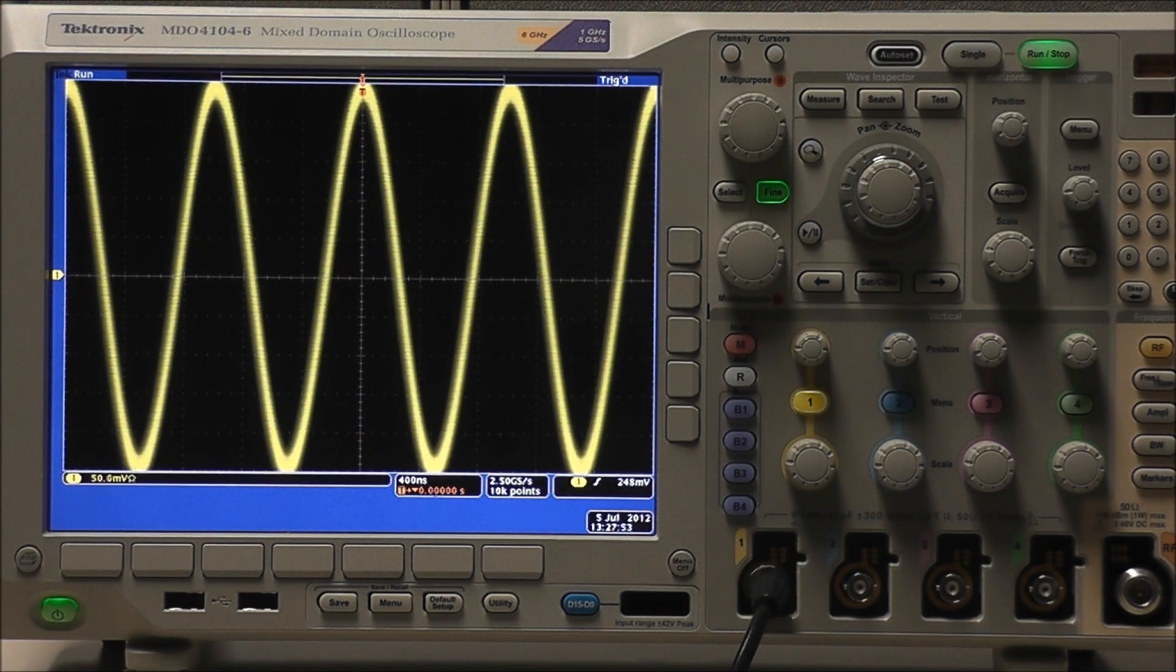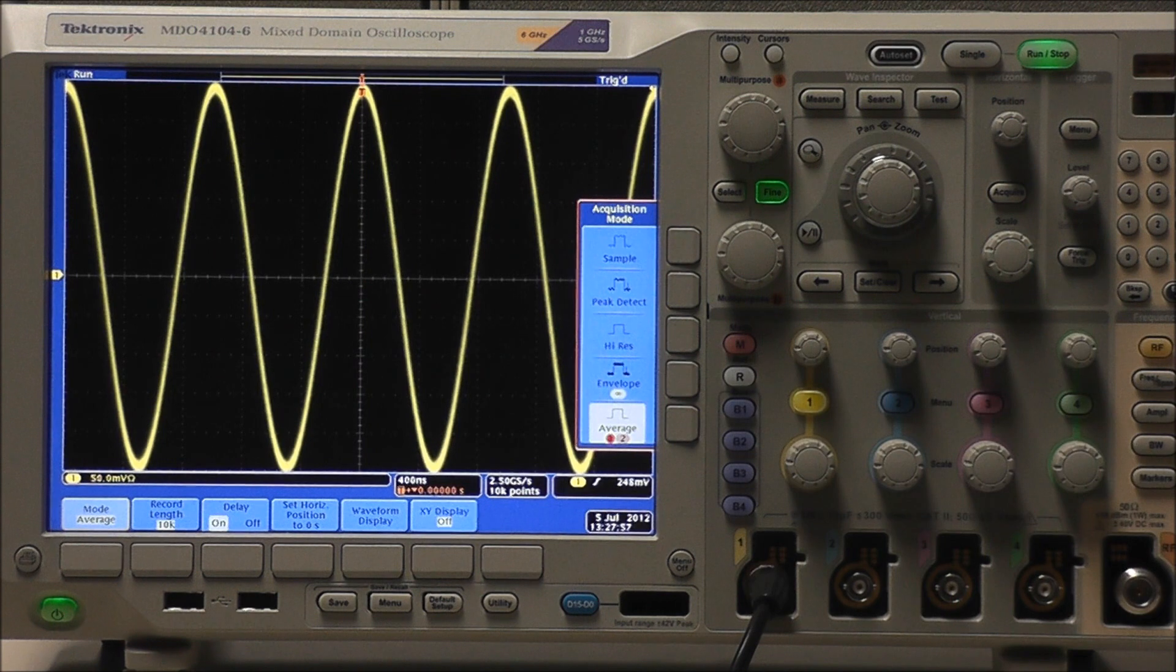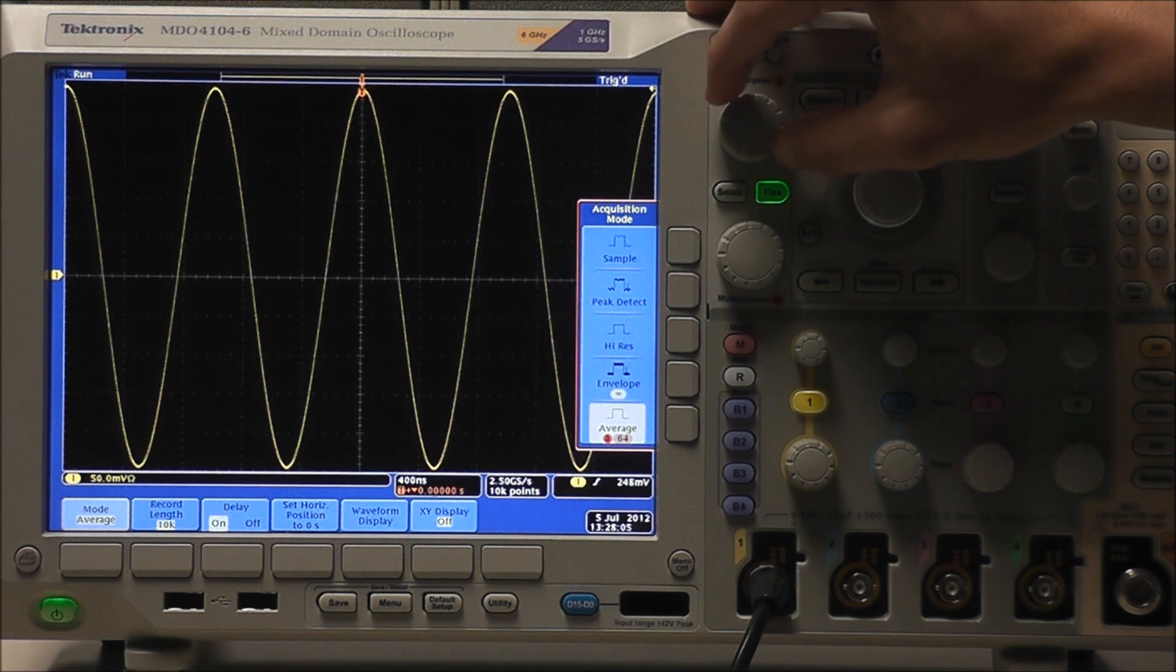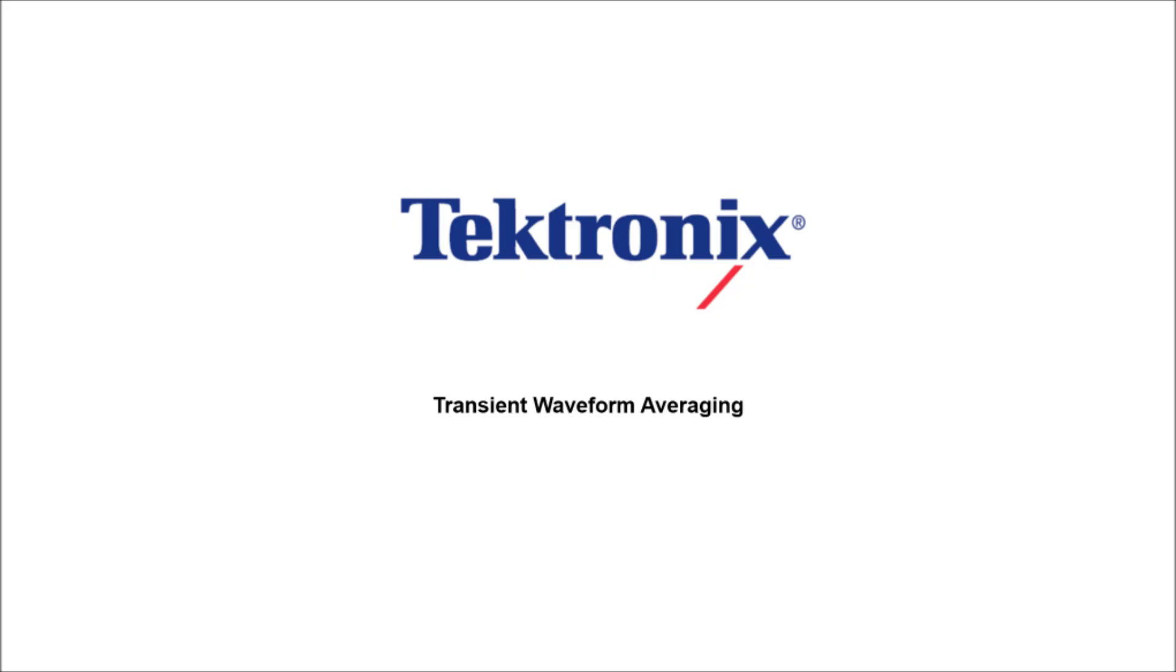Now let's look at an example of this on our scope. Select acquire, mode, and average. And here we can already see substantial noise reduction. But again this trend continues as we increase the sample size until we have a very clean and very fine waveform.